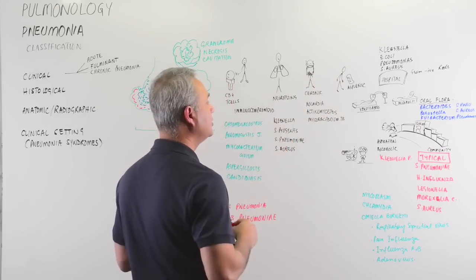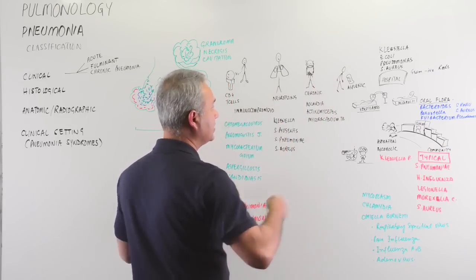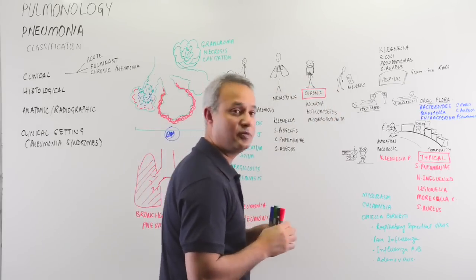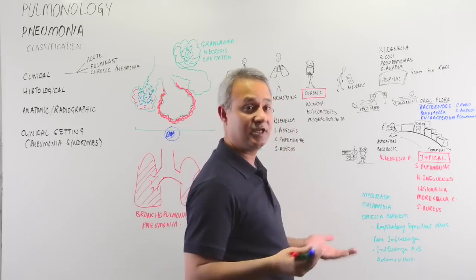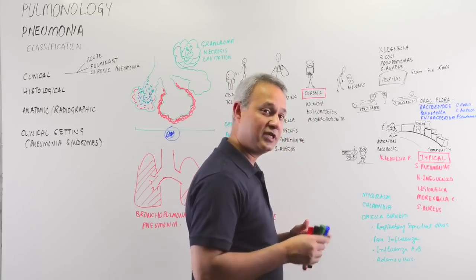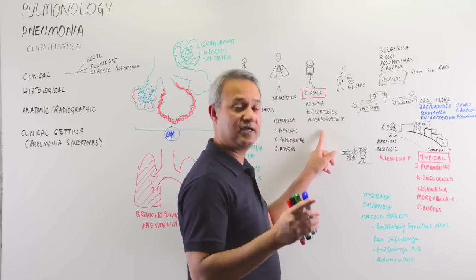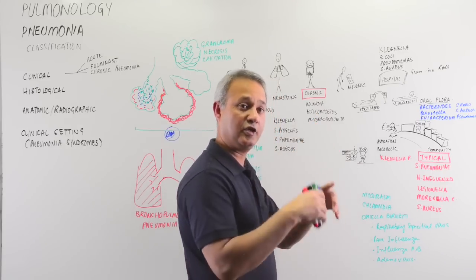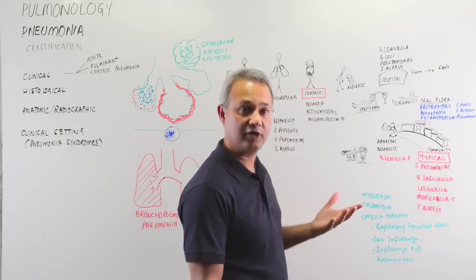If we continue here, chronic pneumonias: Nocardia, Actinomycetes, and Mycobacterium tuberculosis, these are the pathogens that can cause chronic pneumonia which means that they can cause necrosis of the lung tissue, cavitation of the lung tissue and granuloma formations, for example with mycobacterium.